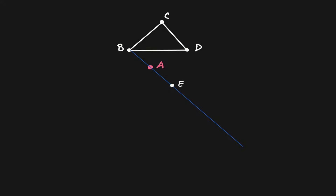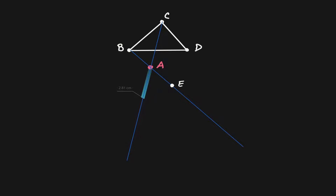Let's do the same procedure but now on point C. Let's draw a line that starts at C and passes through A. Let's find the distance from C to A, which is about 4 centimeters. Now let's give that same distance but starting from point A — which is about here — and let's create a coordinate point.